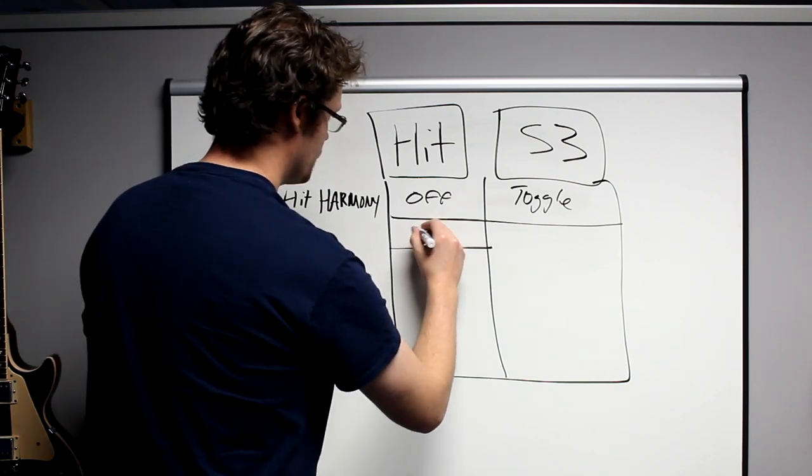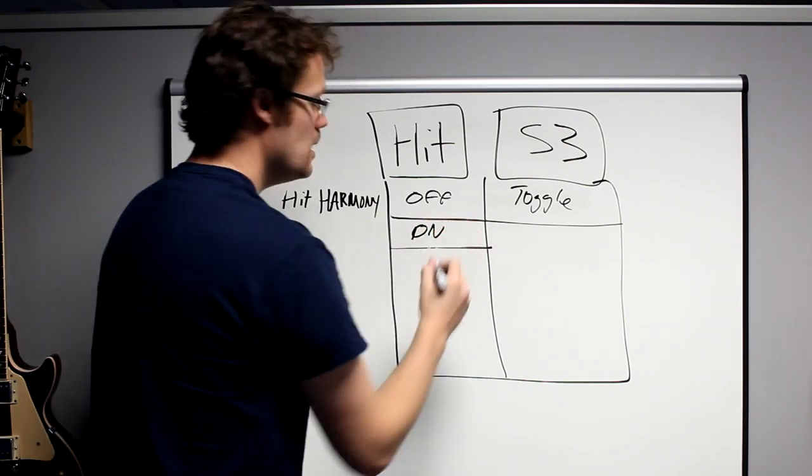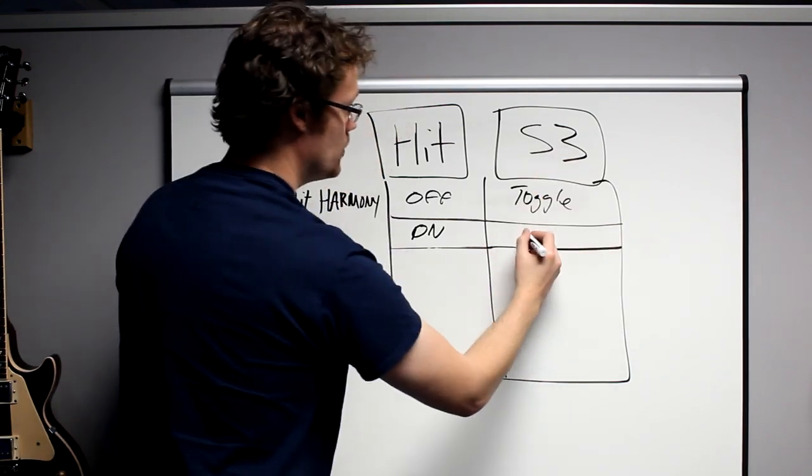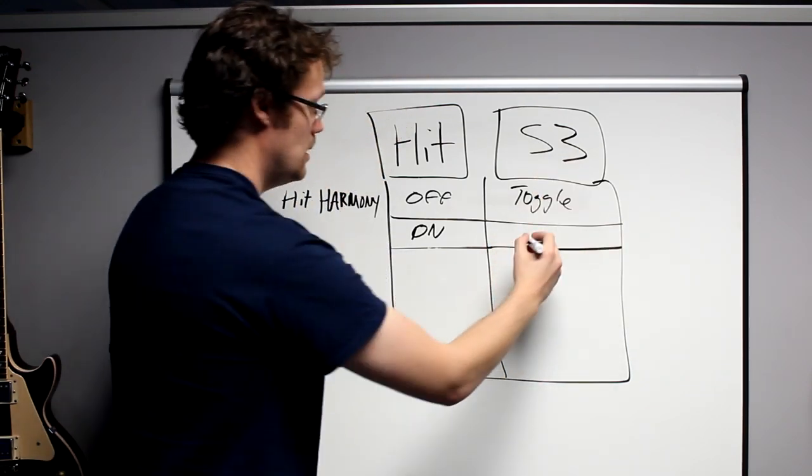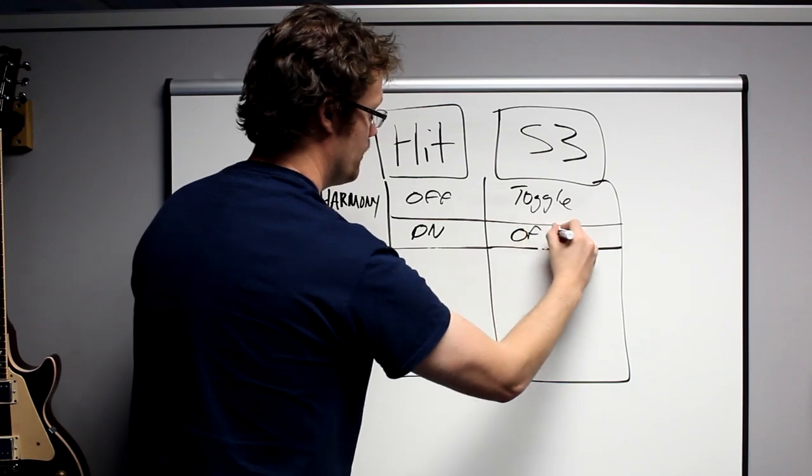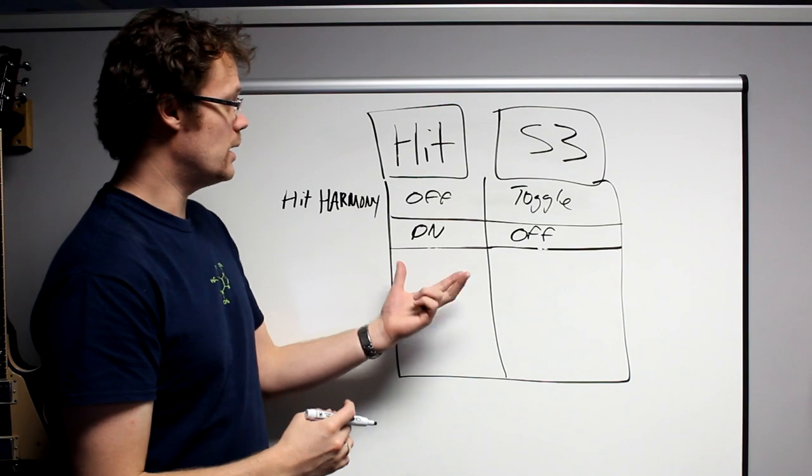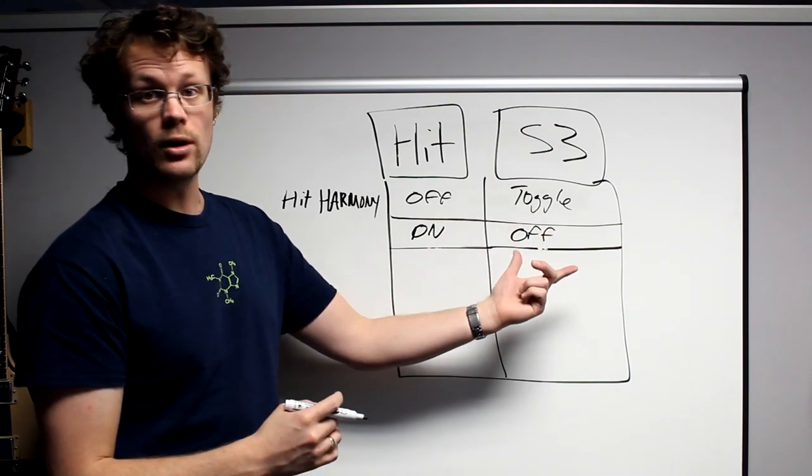If Hit is on, we've got Hit on here. Now the Harmony is already on. What's going to happen when I do the Switch 3? If I press the Switch 3, the Harmony is going to turn off. So now all the other effects that are part of Hit are going to remain on, but the Switch 3 is going to toggle it off.